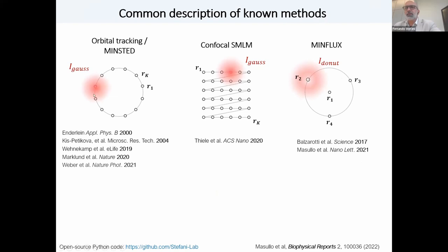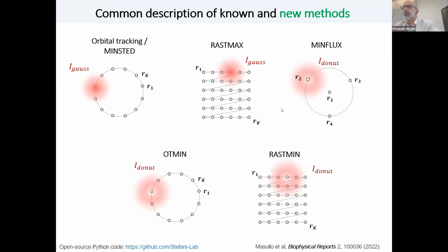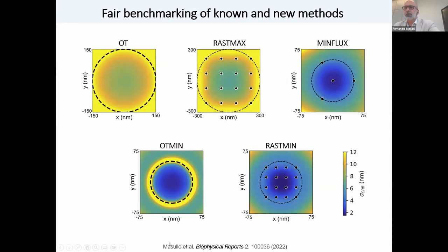But not only that, we can also think of new methods. So why not doing orbital tracking with a donut beam? That's also possible. And now we can evaluate if it's beneficial or it has any advantages. Or why not raster scanning a minimum of light? Like in this method we call RASTMIN. And see if that's of any use. We can also compare it. So here you see a very small summary of this. You can find more details in this paper. So what you see here is basically the best performance that you can achieve with orbital tracking, RASTMAX, MinFlux, or these new methods, orbital tracking with a minimum and RASTMIN. The first thing you notice is that all the methods using a minimum of light are providing the best localization precision. And another thing you can notice very quickly is that the methods using a Gaussian beam or a maximum of light, they require a larger scan.